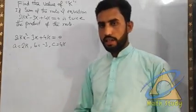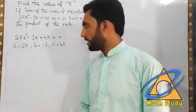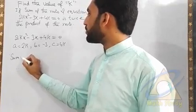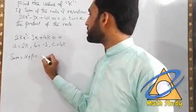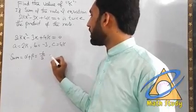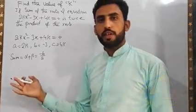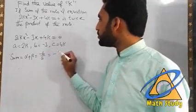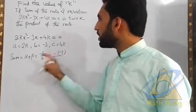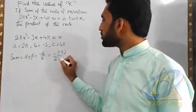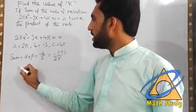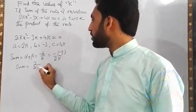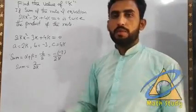I have the sum of roots and product of roots formulas. Sum of roots is α + β = -b/a. So the sum of roots equals -(-3)/2k. The sum of roots will be 3/2k.